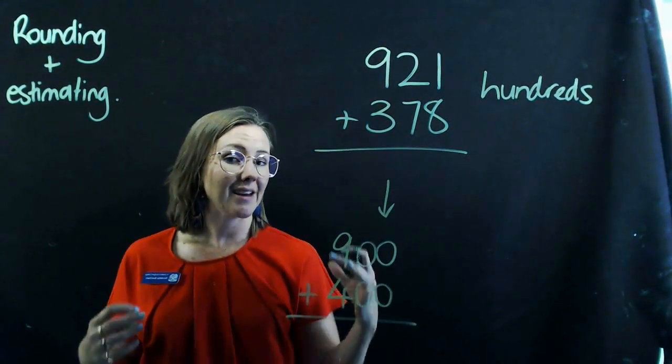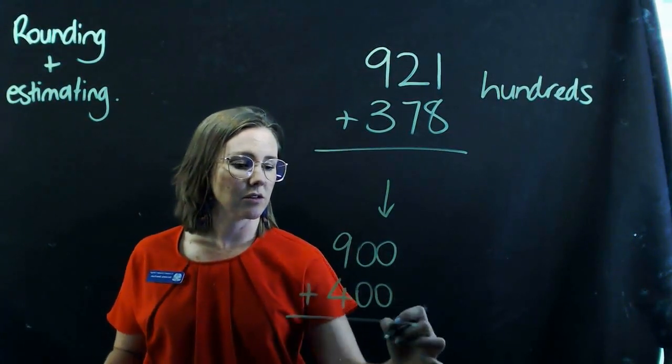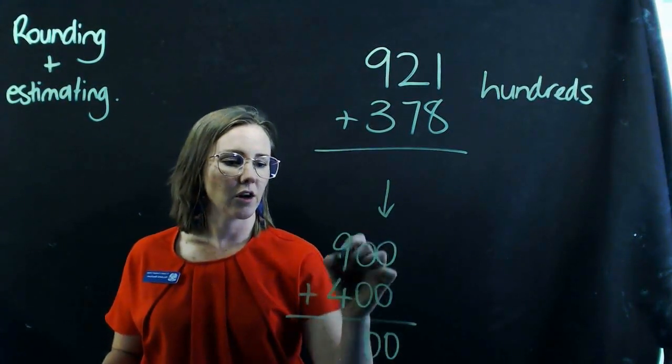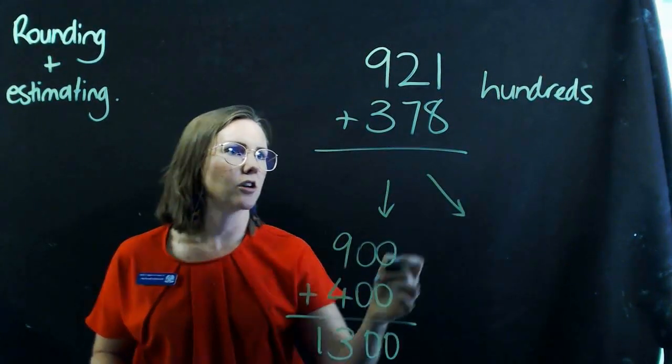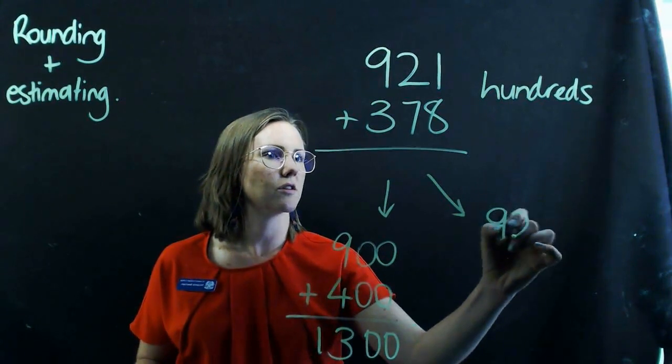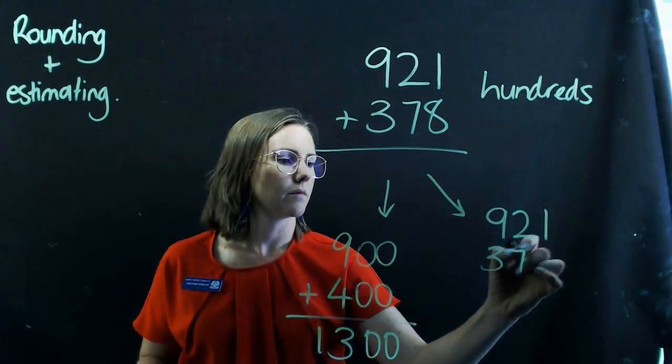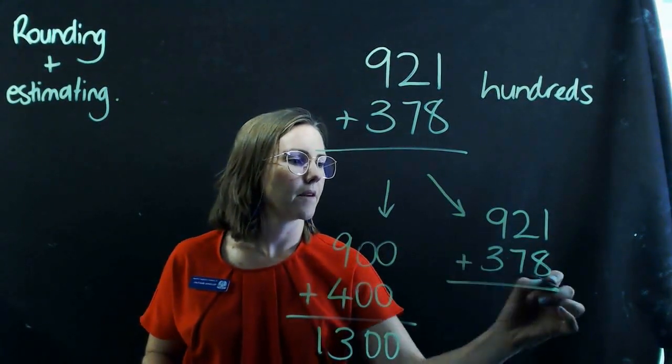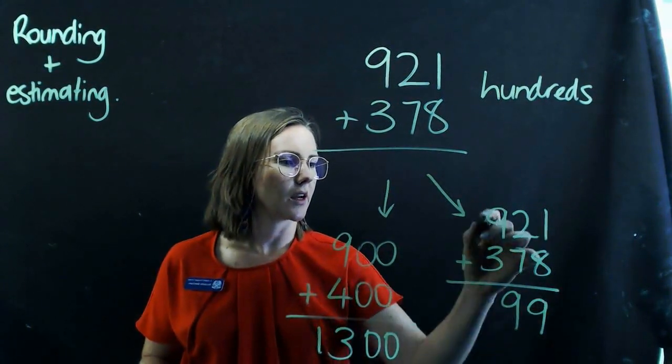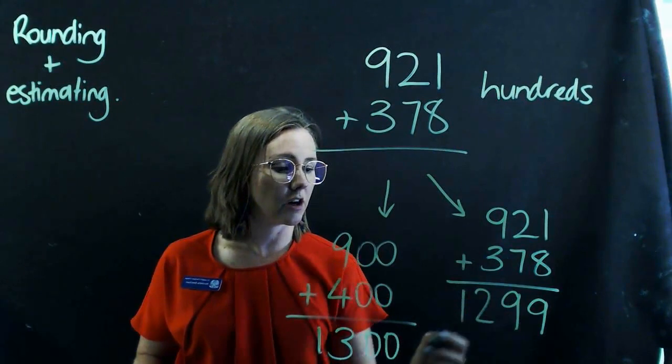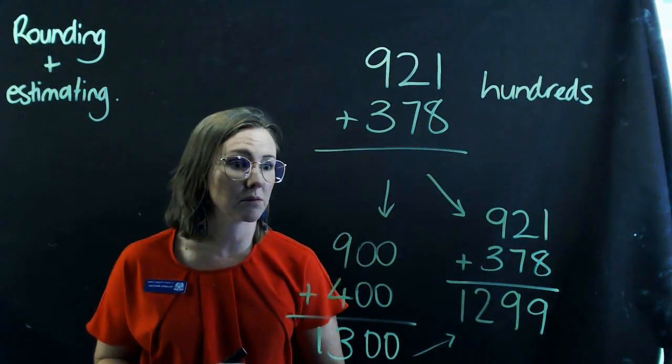And then my estimate, so 0, 0, 9 and 4 is 13, should be 1,300. Let's see how close it actually is when I do the sum. So 1 and 8 is 9, 2 and 7 is 9, and 9 and 3 is 12. So super close. I didn't even plan that, I promise.